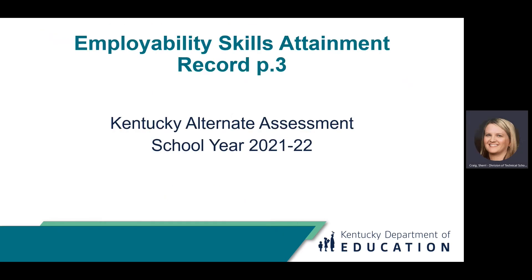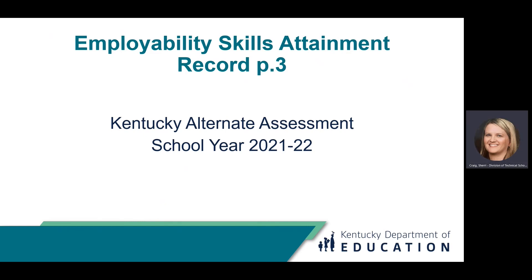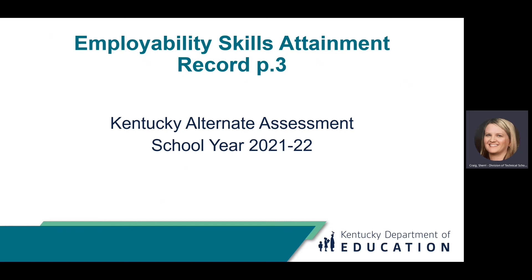The Employability Skills Attainment Record, referred to as the ESAR, is one of the four components of the Kentucky Alternate Assessment. The ESAR was developed for students with significant cognitive disabilities in an alternate course of study and working towards the alternative high school diploma. The ESAR is designed to provide a career readiness measure within the post-secondary readiness indicator of Kentucky's accountability system.